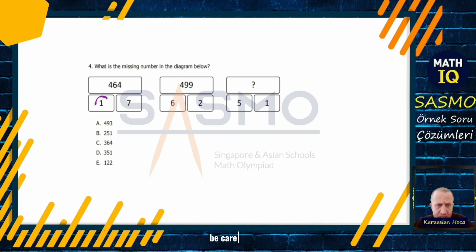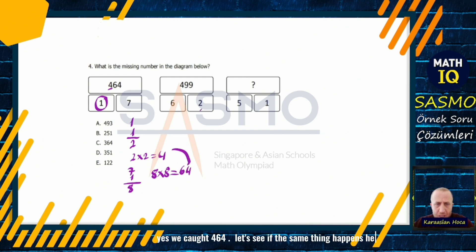Now 1. Be careful, when we collect itself. When we add 1 to 1, it's 2. 2 times itself, 4. We got 4, we're coming to 7. The sum of 7 and 1 is 8. 8 times itself, 64. Yes, we caught 464. Let's see if the same thing happens here.